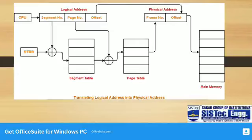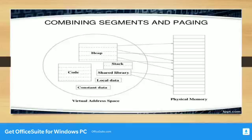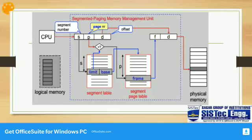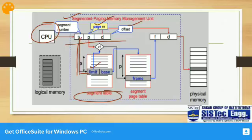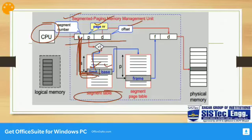Now let's see how it works. Consider this diagram. The CPU generates a logical address containing a segment number, page number, and offset. First, you search the segment table, which has a limit and base — a concept you have already seen in segmentation. First, the limit is checked. The limit is compared to your segment number; it should be less than the limit.